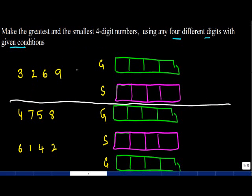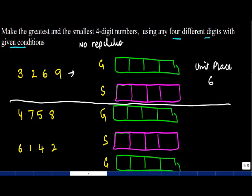For the first example, the condition is that at the units place the digit must be 6, and there is no repetition allowed. Since I've been told that at the units place I have to put 6, I will place 6 in the units place for both the greatest and smallest number.